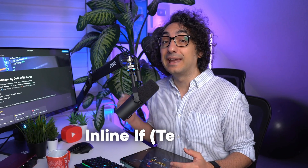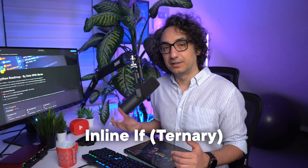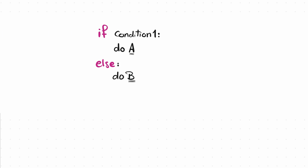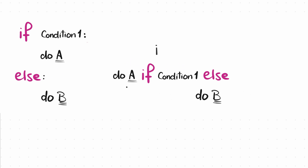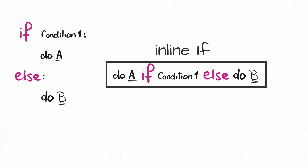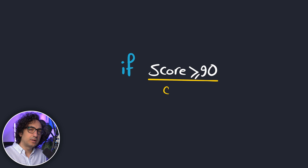Now we can talk about something cool: the inline if statements, or we call it sometimes the ternary operator. So instead of writing the if statements in multiple lines, you can put the whole thing in one quick line. It is quicker, shorter, and doesn't take a lot of space. So let's understand what this means — we start as usual with the if statement, and after that we have our condition, so nothing new so far.